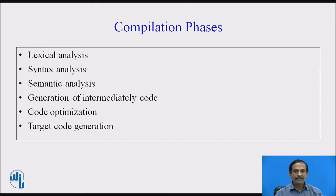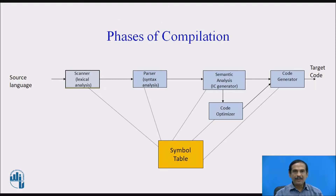The six phases of compilation are: lexical analysis, syntax analysis, semantic analysis, generation of intermediate code, code optimization, and target code generation. These phases are involved with a symbol table and an error handler.